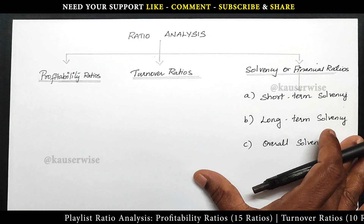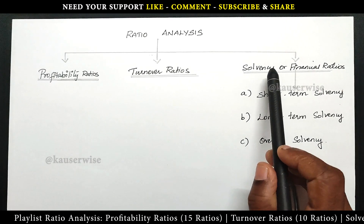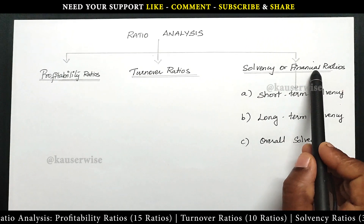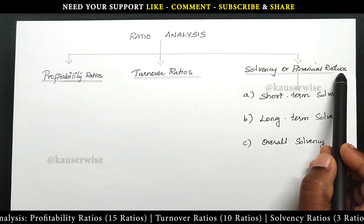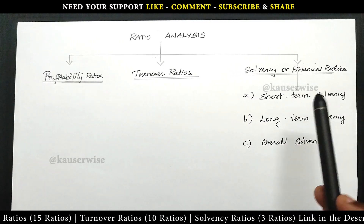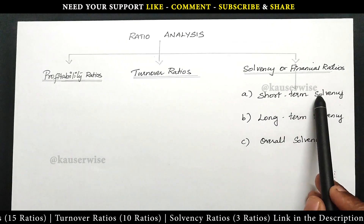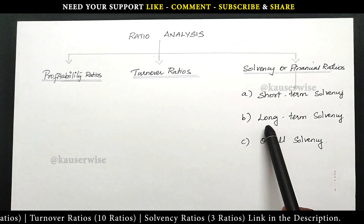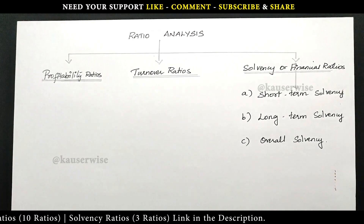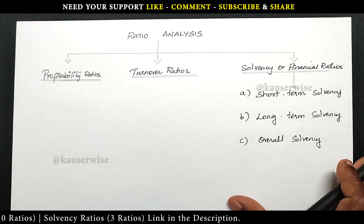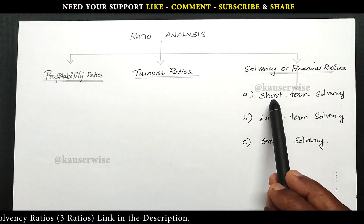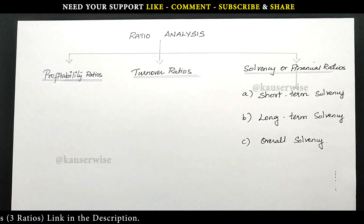In this video we are going to see solvency ratios, otherwise called as financial ratios. Solvency ratios are classified as short term solvency, long term solvency, and overall solvency. Now we are going to see the numerical problem for the first one, that is short term solvency.